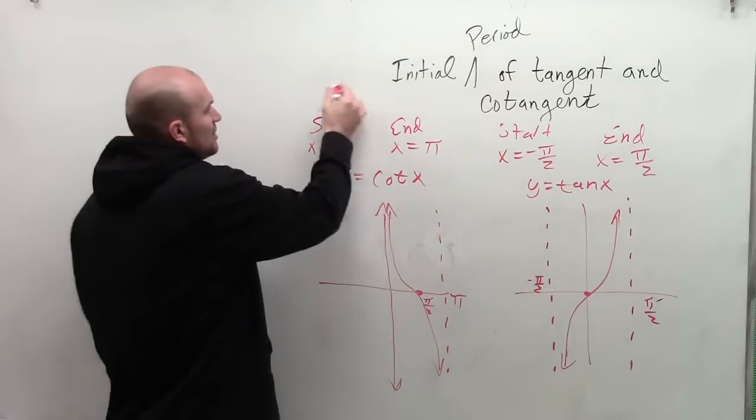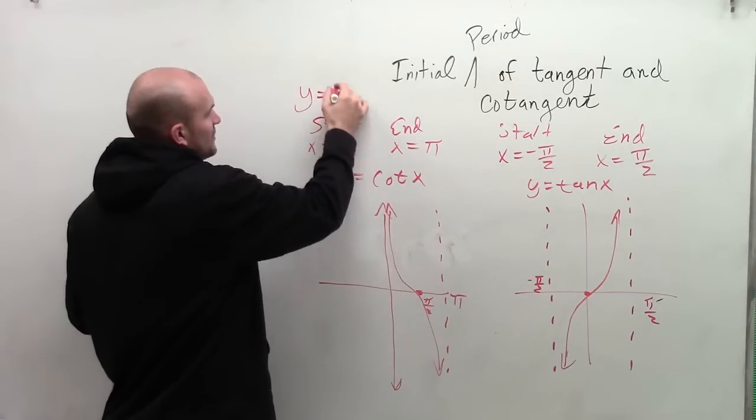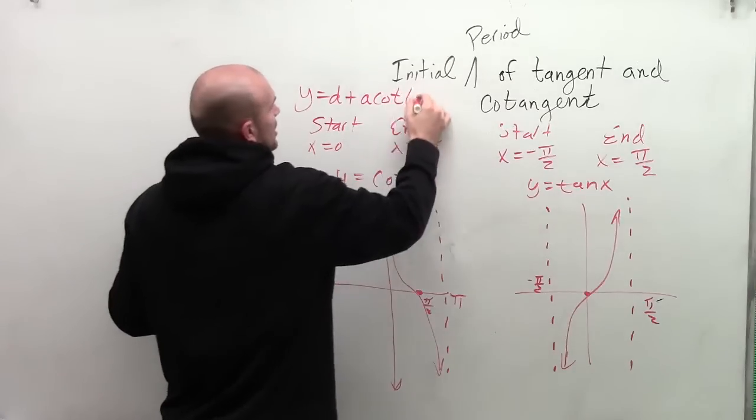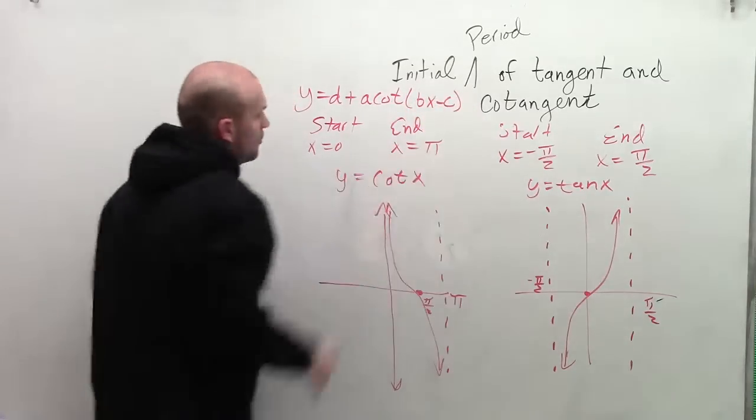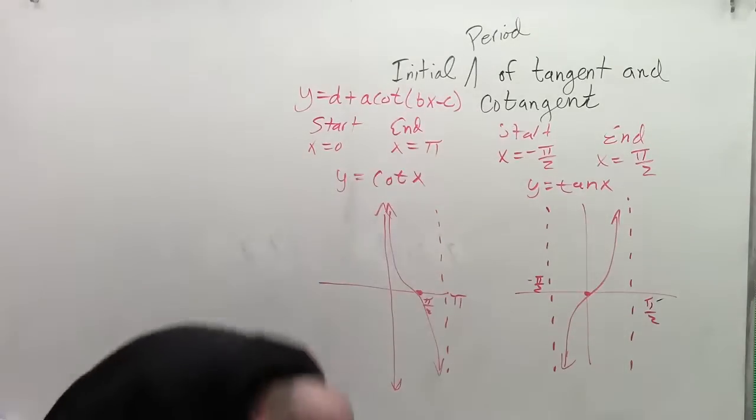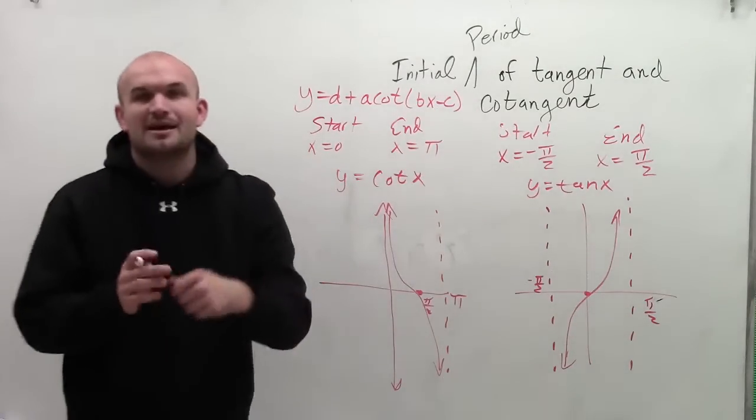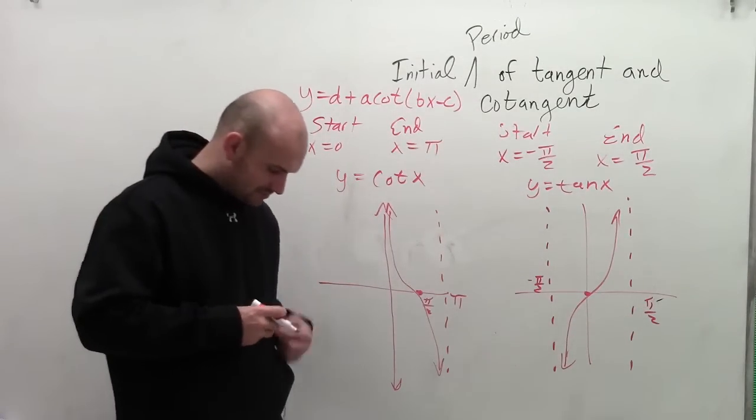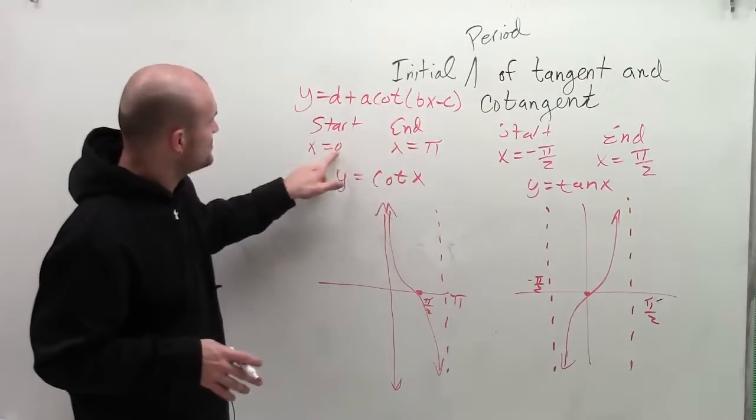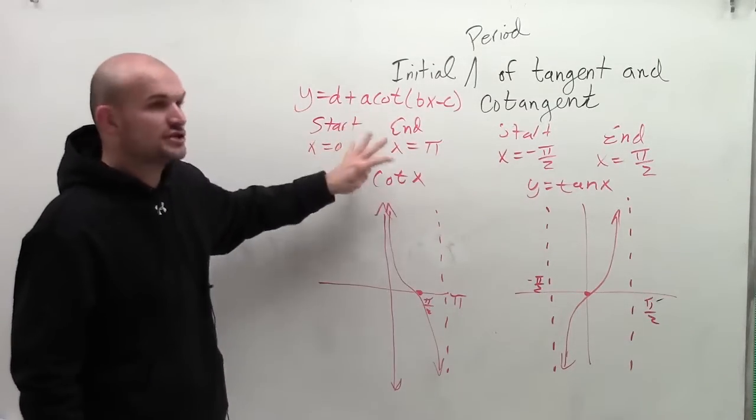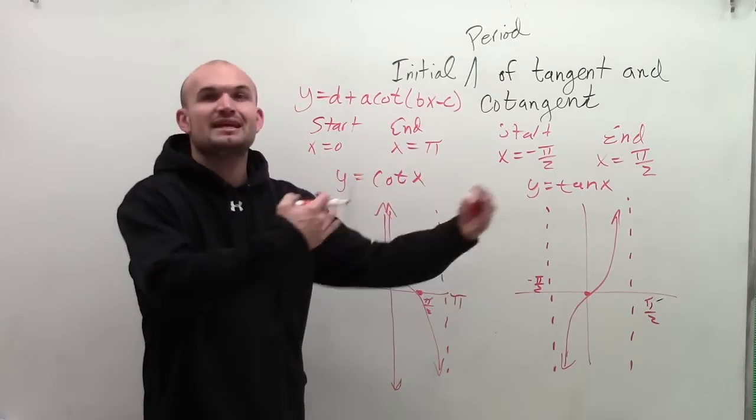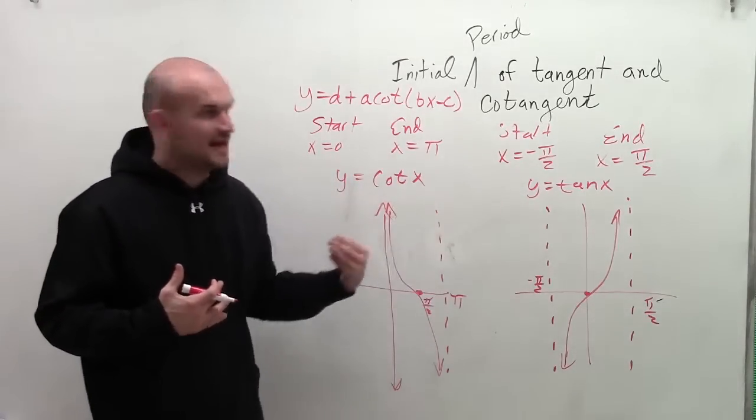So for this graph, I just have x. But when we look at the standard form of our graph, when I have d plus a times cotangent of bx minus c, what you're going to do is you're going to take bx minus c, if there's any transformations, and what you're going to do is set that equal to 0 and pi, because that's your initial period. Then once you get that initial period, you can just keep on repeating periods in the positive and negative direction.